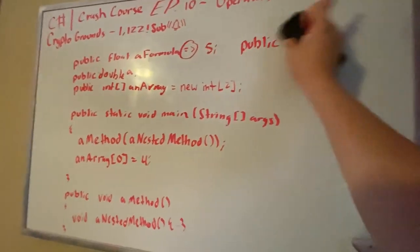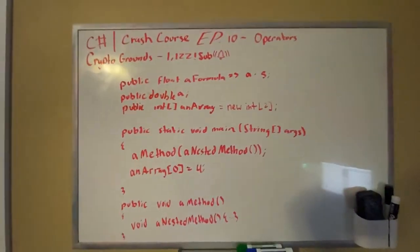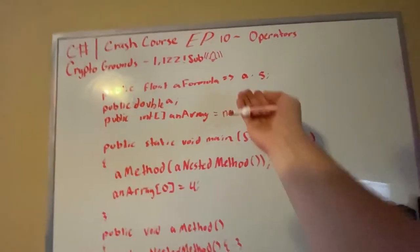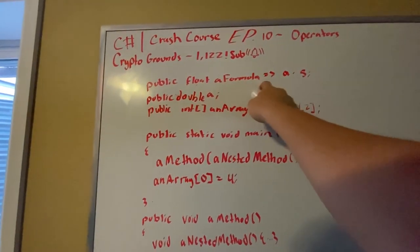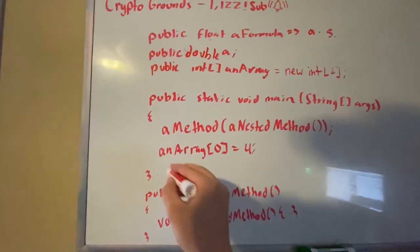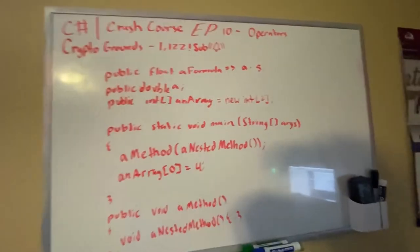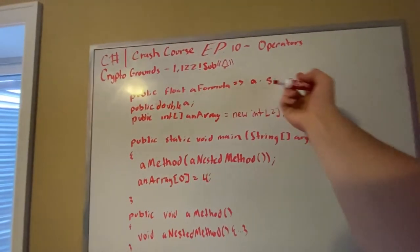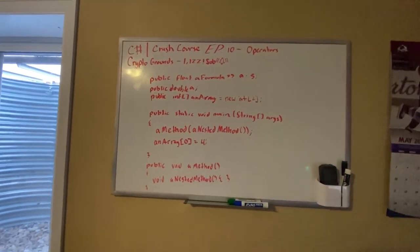If you want something to always be a fixed value, use 'public const' — for example, public const float set equal to five. However, if you want a formula that changes dynamically — like always being a times five — use the arrow operator. So if a changes, the formula value changes too. When you call console.writeline on that formula, it will print a times five, which would be 20 if a is set to four.